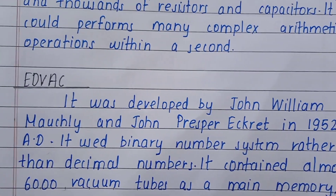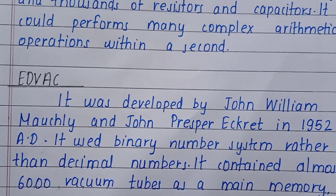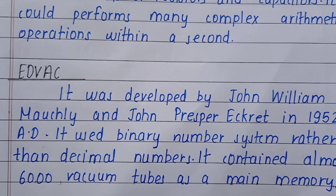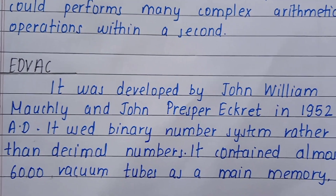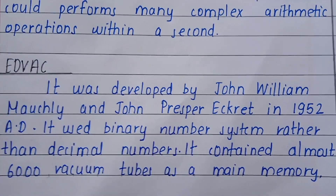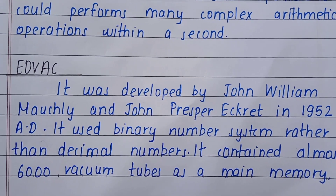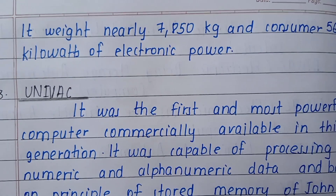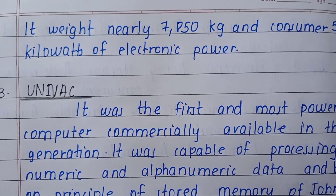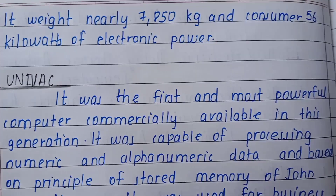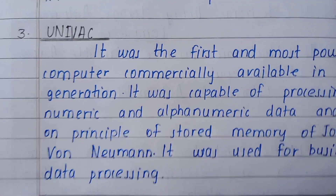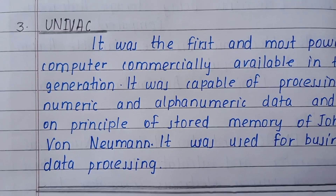The second electronic era device is EDVAC. It was developed by John William Mauchly and John Presper Eckert in 1952 AD. It used a binary number system rather than a decimal number system. It contained almost 6,000 vacuum tubes as main memory and weighed nearly 7,850 kg, consuming 56 kilowatts of electric power.